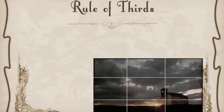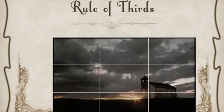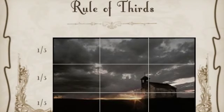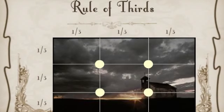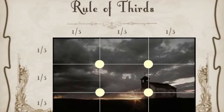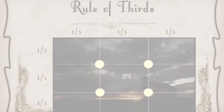On the rule of thirds, you divide the frame into thirds, both vertically and horizontally. And on those points where those two lines connect, that is the most interesting place for you to put your subject or whatever object you're photographing.